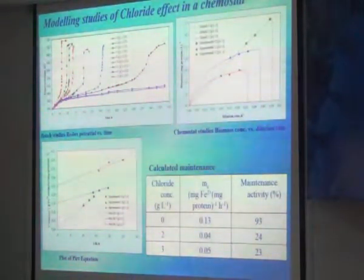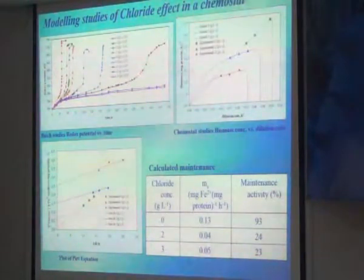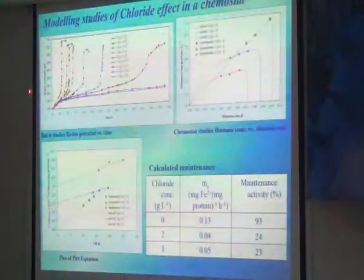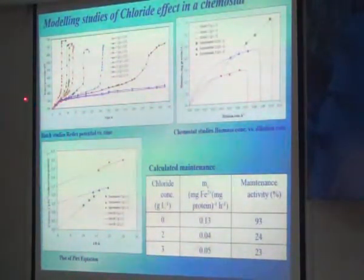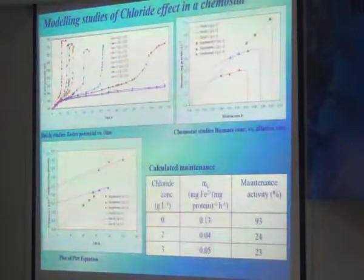Most people study in batch shake flasks and see the chloride toxicity there — at something like 11 to 12 grams per liter. But at 12–13 grams per liter, you have no growth. Same thing: if you go at 4 grams per liter in a continuous reactor, you are washed out. You cannot conclude from batch studies that continuous studies are the same thing.